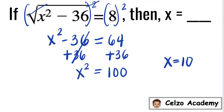10 works because 10 to the second power means 10 times 10, which is equal to 100. So 10 is correct. Can you think of another value of x that will make this true? Will negative 10 work? If we substitute negative 10 for x, we have negative 10 to the second power, which means negative 10 times negative 10, and that is also equal to 100. So both 10 and negative 10 will work. In this equation, x squared is equal to 100.